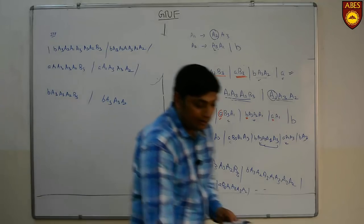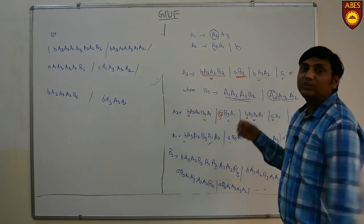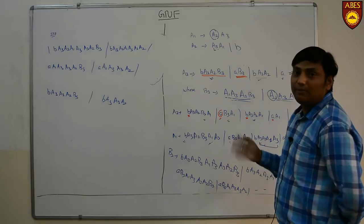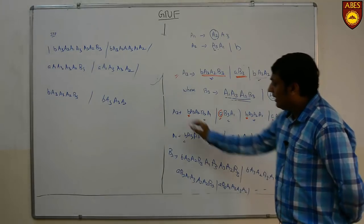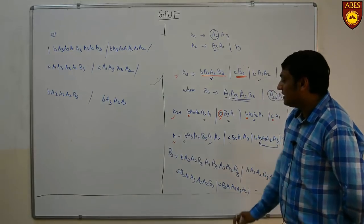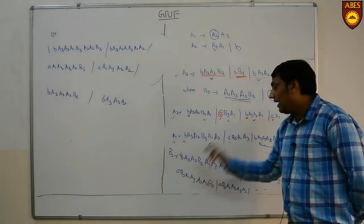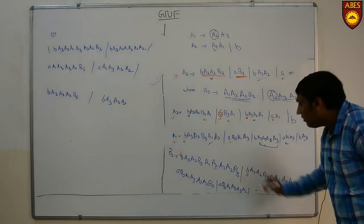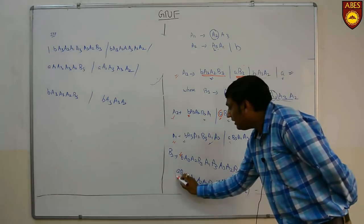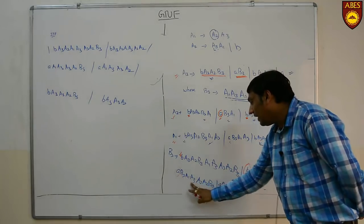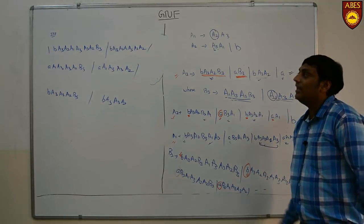In GNF, every term should either contain a terminal or start with a terminal followed by any variable. A3 is already in GNF, A2 is in GNF, A1 is in GNF. B3 is also in GNF because its first letter is a terminal followed by any variables — every term contains a first letter as terminal followed by any set of variables.